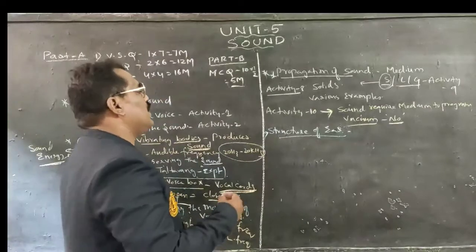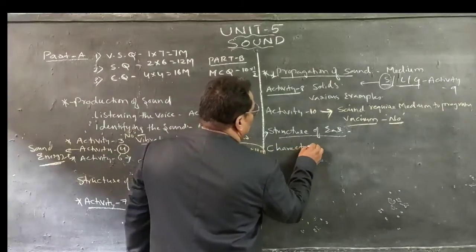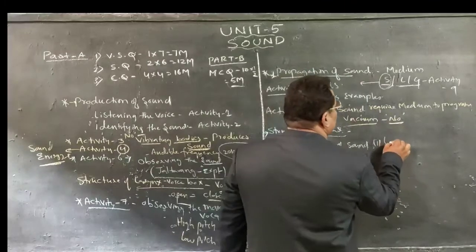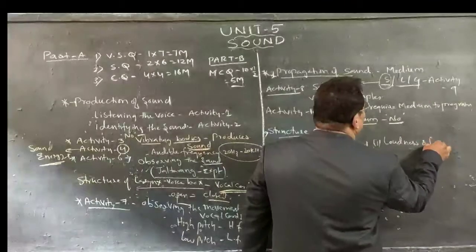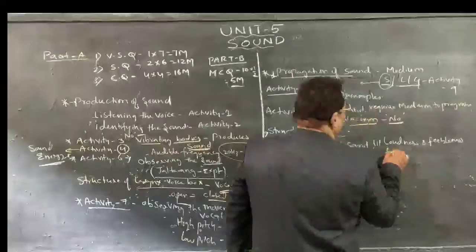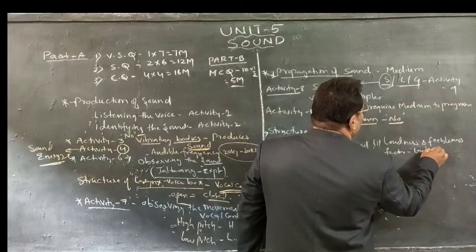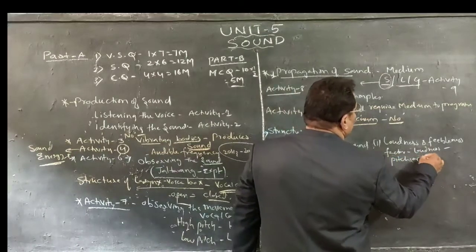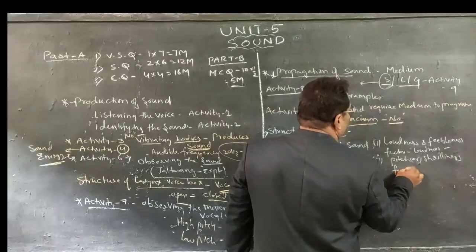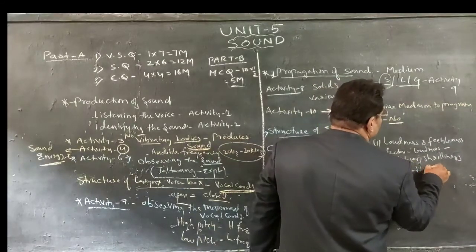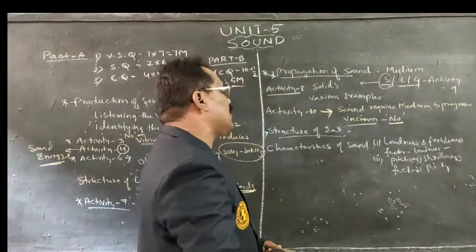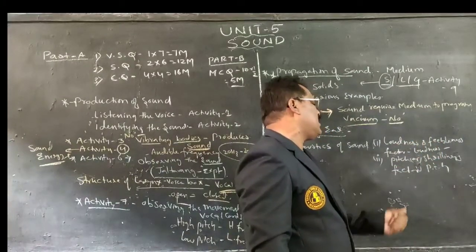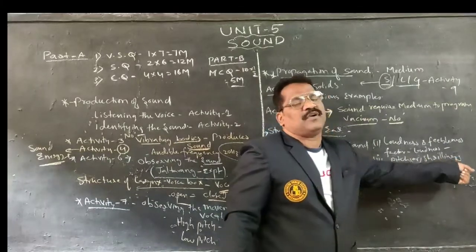After the structure of the ear, we are having characteristics of sound. Within this, two different characteristics are there: first is loudness and shrillness, and on what factors this loudness depends we have studied. Second is pitch — on what factors this pitch will differ, we have clearly studied within the characteristics.